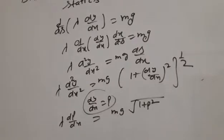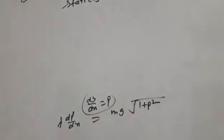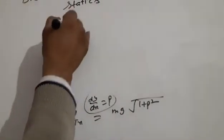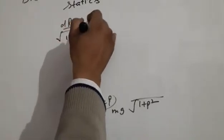Here we are always calling p-value, dy/dx. Taking constant point, dp upon under root 1 plus p square equals mg upon lambda dx.